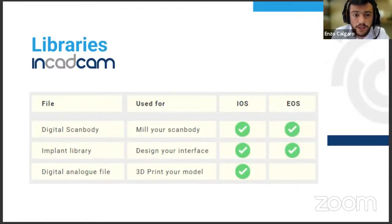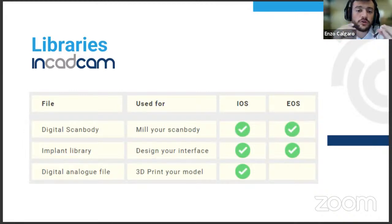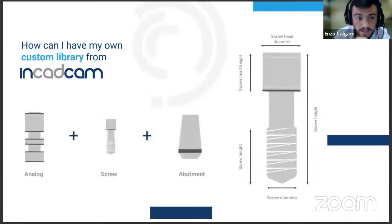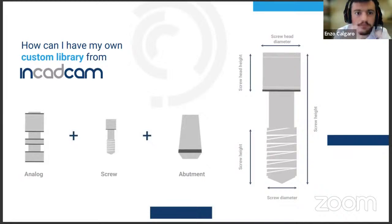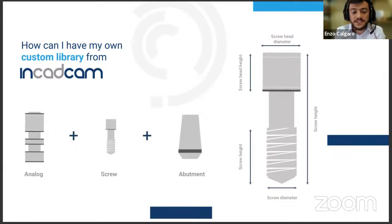We work with two different types of scan bodies: intraoral and extraoral. Both have the scan body file and the implant library, but only the intraoral one has the digital analog file — so when you 3D print the model, the implant placement is already included. We offer a large portfolio of different libraries, but if you use one we haven't developed yet, you can send us the analog, the screw, and the abutment, and we will develop a library exclusively for you.